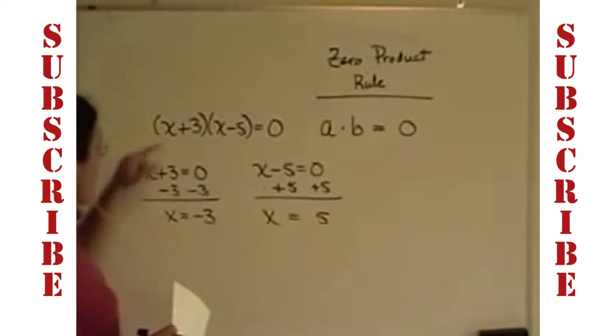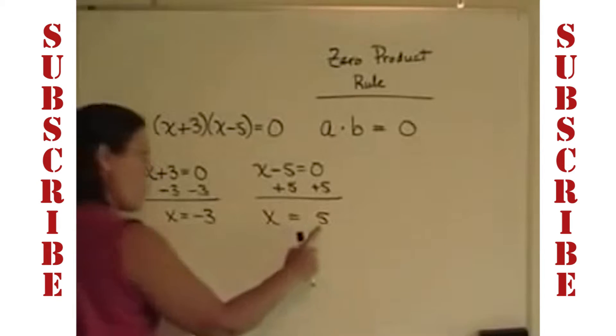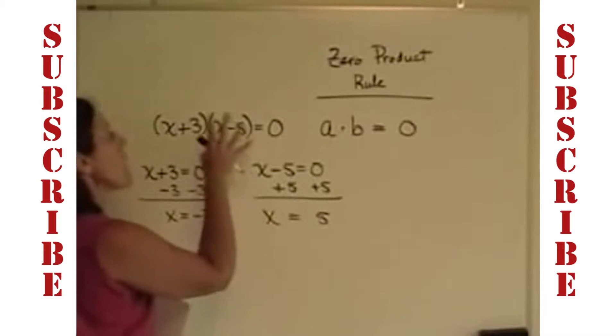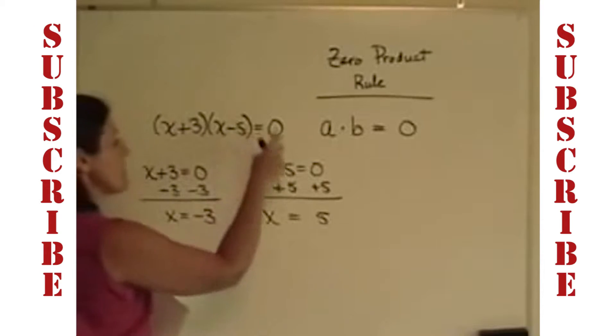If you go back here and check each of these one at a time, when you put a negative 3 into this binomial here, negative 3 plus 3 is zero. I don't care what happens over here, zero times something is zero. When you put a 5 into this original equation, I don't care that this is going to be equal to 8. 5 minus 5 is zero, and zero times anything is zero.